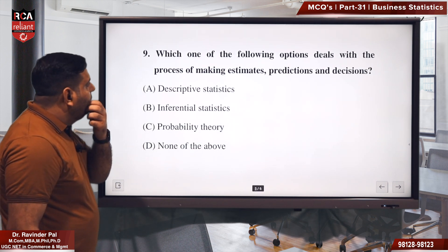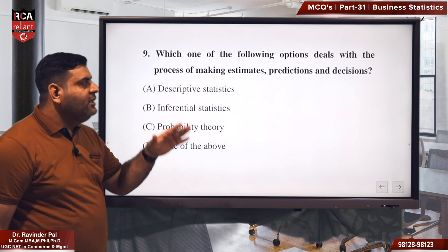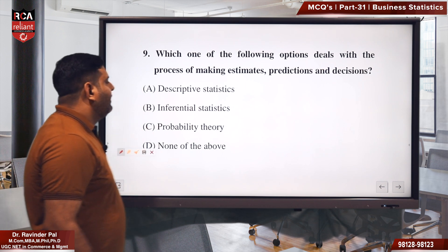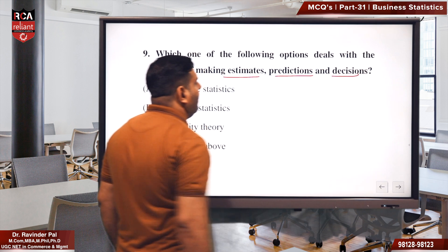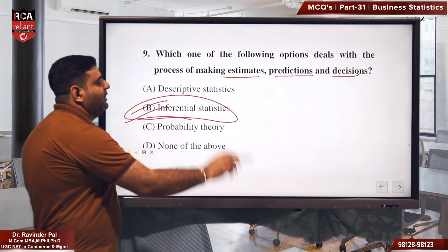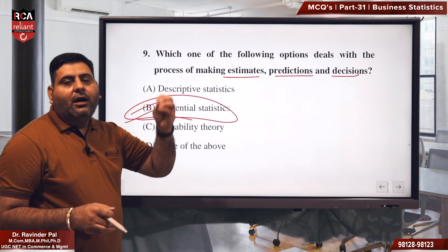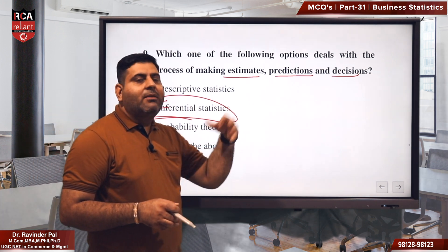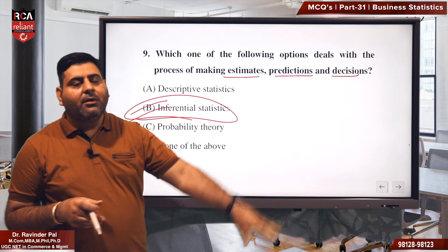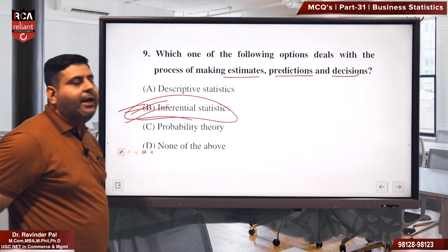Ninth question: which one of the following deals with the process of making estimates, predictions, and decisions? When we are going to find out some result, want predictions, estimates, or want to take decisions — this is called inferential statistics. So the right answer will be B — inferential statistics.